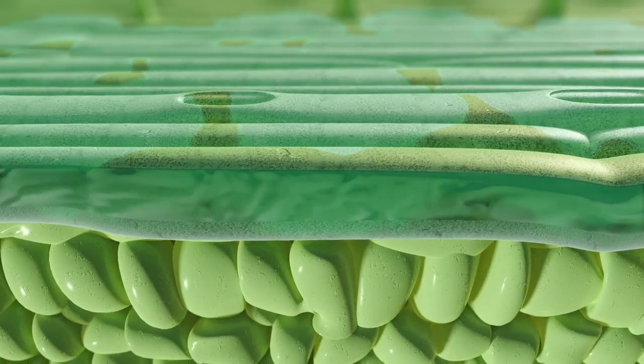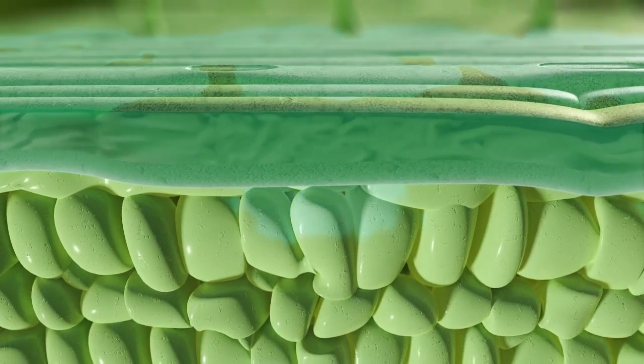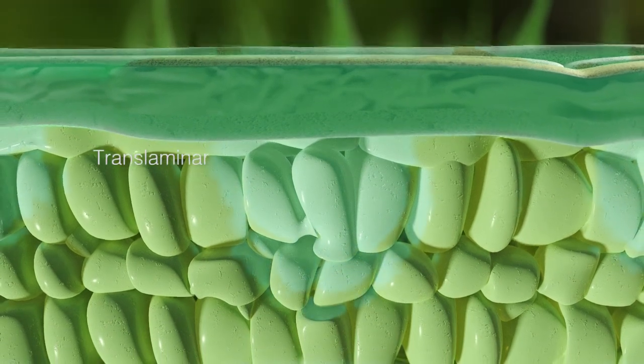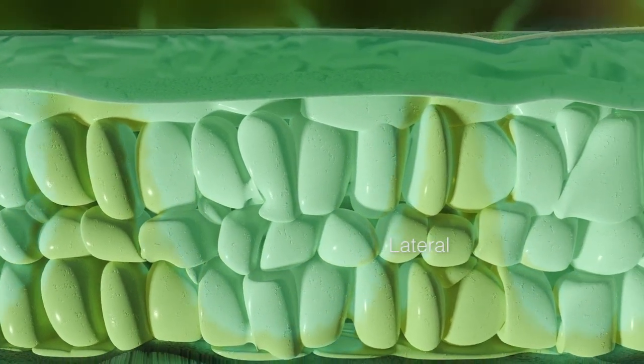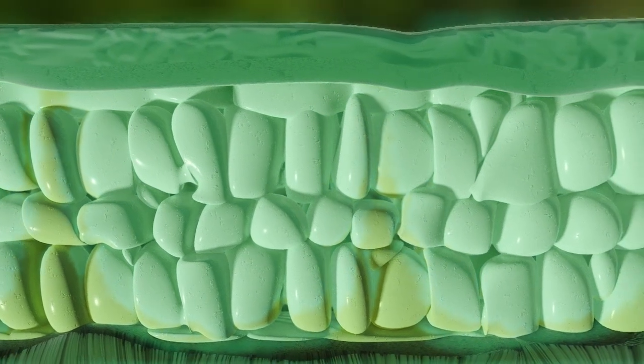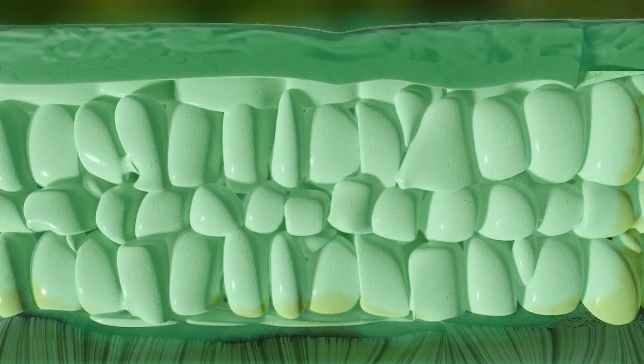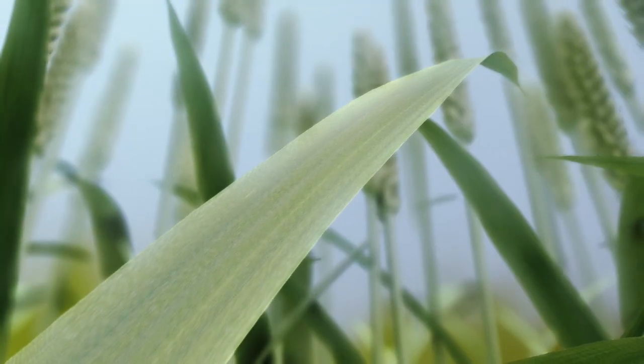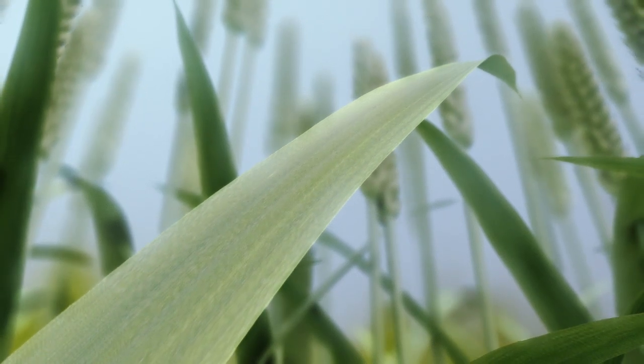The product is absorbed into the leaf and distributed by both translaminar movement and distinct sideways movement, especially in the direction of the leaf tip. Unlike some other active ingredients, this movement results in a more uniform distribution throughout the leaf tissue.